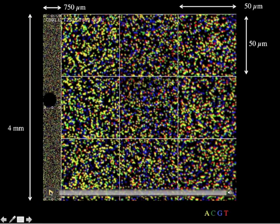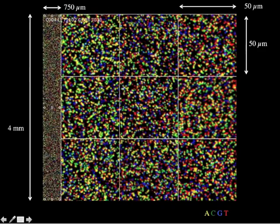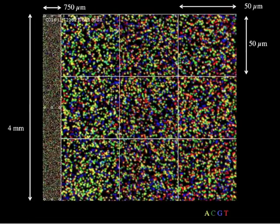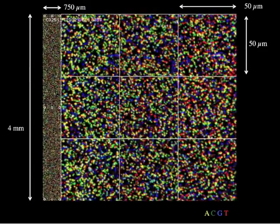The micrograph shows a field of randomly scattered points of light, each of which is one of four colors. Each colored dot is a cluster of identical DNA molecules that is being copied one base at a time.